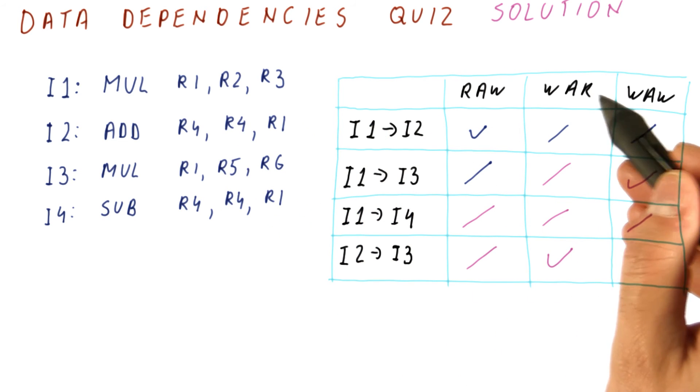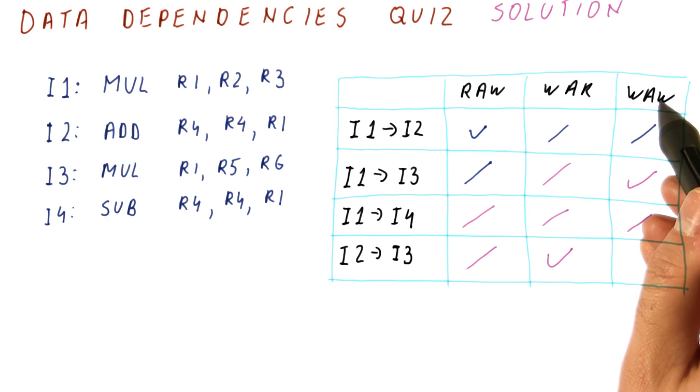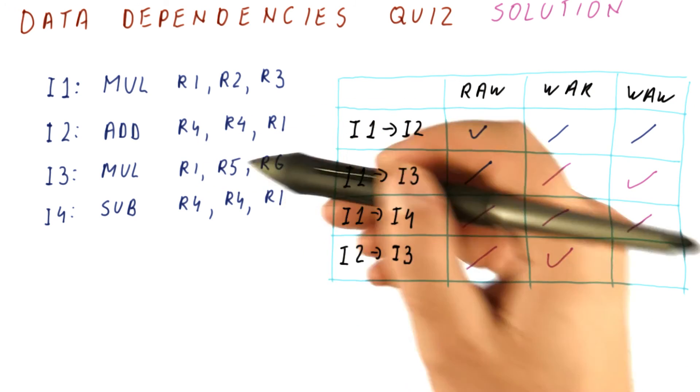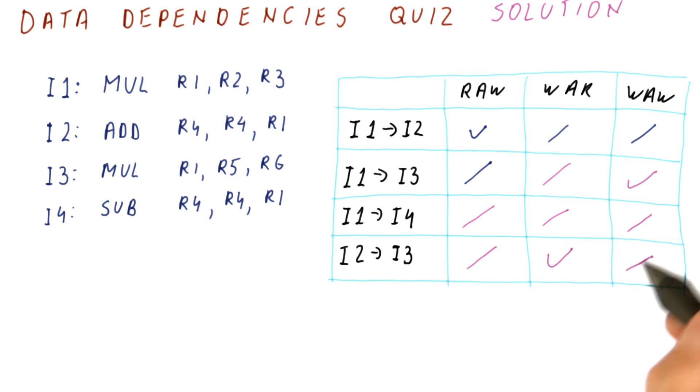So we have a write after read dependence. And finally, we do not have a write after write because they are accessing different registers for writing. So this is again not selected. So the only check marks you were supposed to put in are this one and this one.